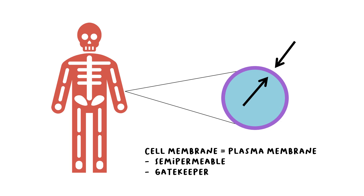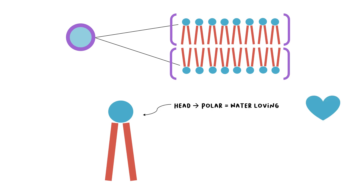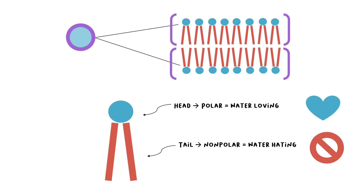Let's zoom in and take a closer look into the cell membrane. There are two distinct rows that make up the membrane — it is called a lipid bilayer, basically two layers of these V-shaped objects called phospholipids. The head of the phospholipid is what we call polar or hydrophilic, meaning water-loving. The tails are non-polar or hydrophobic, meaning water-hating.